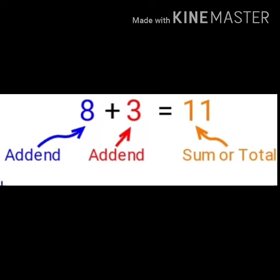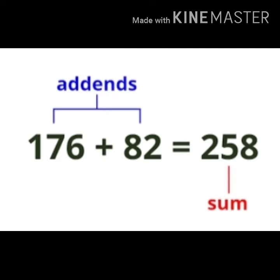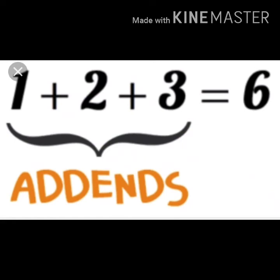Here are some more examples. We have 8 plus 3 is equal to 11, so 8 and 3 are addends and after adding these numbers we get 11 as the sum or total. Next, with 2 and 3 digit numbers: 176 and 82 are the addends, and after adding we get 258 as the sum or total. Next with 3 numbers: 1 plus 2 plus 3 — here 1 plus 2 is 3, and 3 plus 3 is 6 — so 1, 2 and 3 are the addends and 6 is the total.